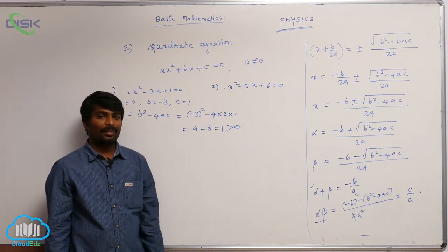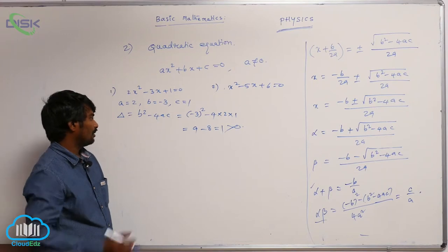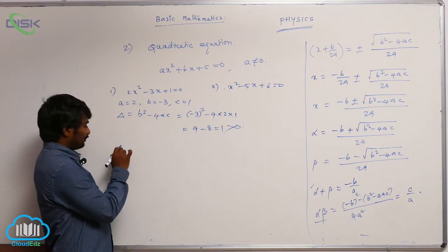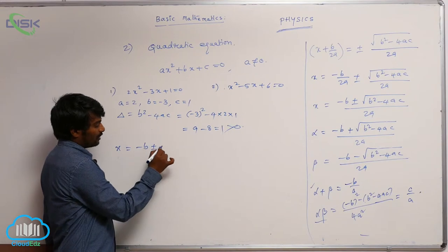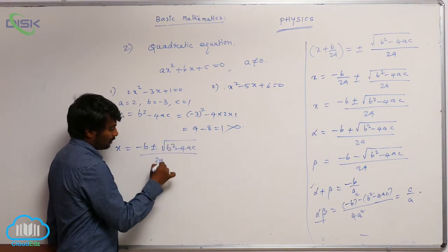That is why we are having real and unequal roots. And the roots are minus b plus or minus under root of b square minus 4ac by 2a.